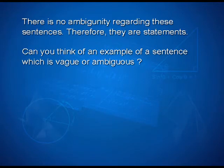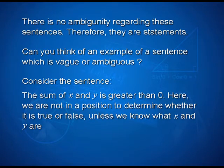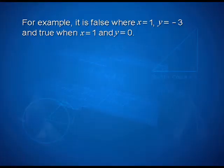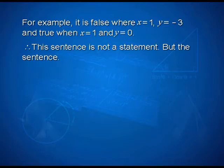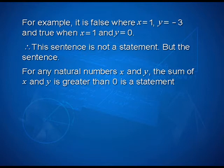Can you think of an example of a sentence which is vague or ambiguous? Consider the sentence: the sum of x and y is greater than 0. Here, we are not in a position to determine whether it is true or false, unless we know what x and y are. For example, it is false when x equals 1 and y equals negative 3, and true when x equals 1 and y equals 0. Therefore, this sentence is not a statement. But the sentence 'for any natural number x and y, the sum of x and y is greater than 0' is a statement.